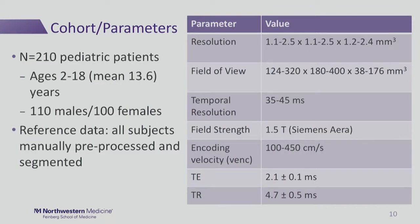The cohort that we're using to try to do this is a pediatric cohort of 210 pediatric patients. They all had a standard 4D flow acquisition at 1.5 Tesla on Siemens scanners. All of these have generated reference data, so every subject has been manually pre-processed and also manually segmented in three dimensions.